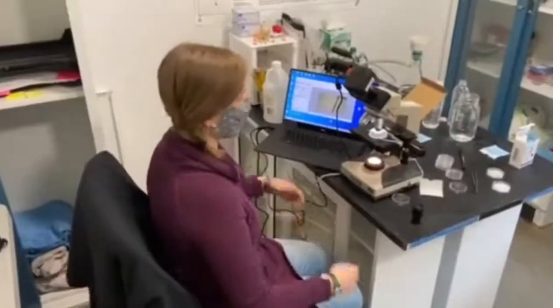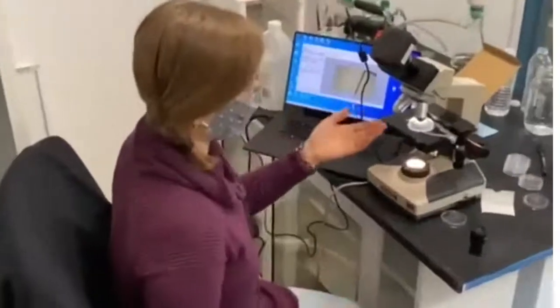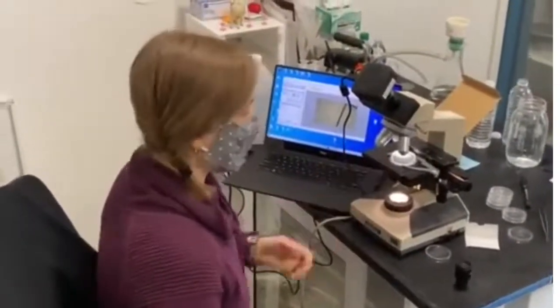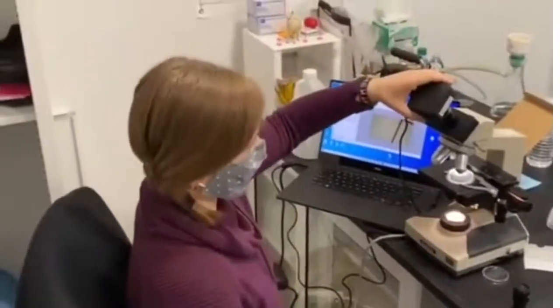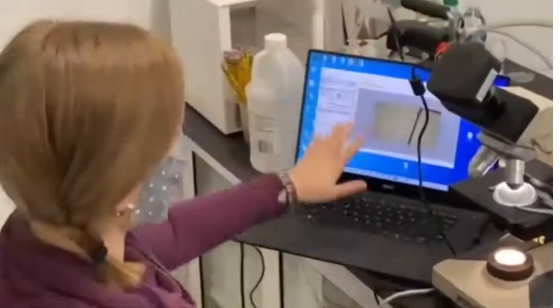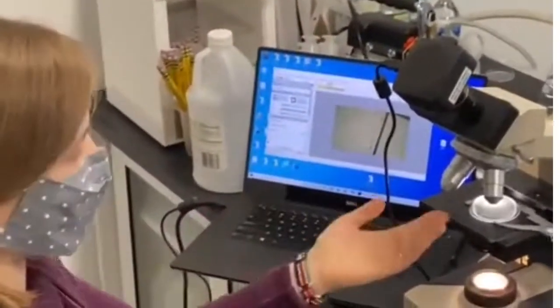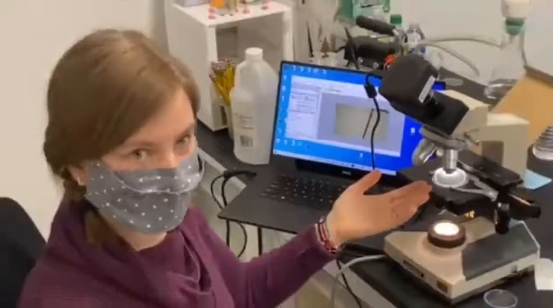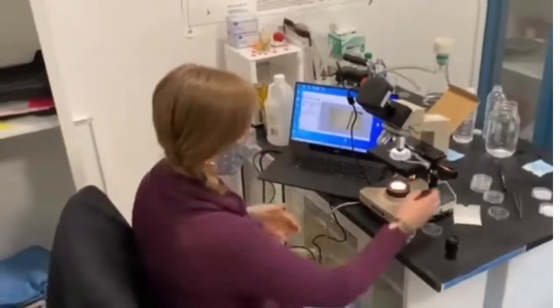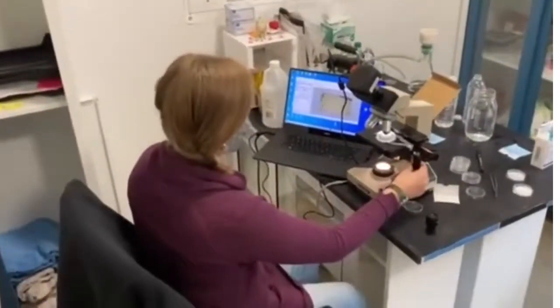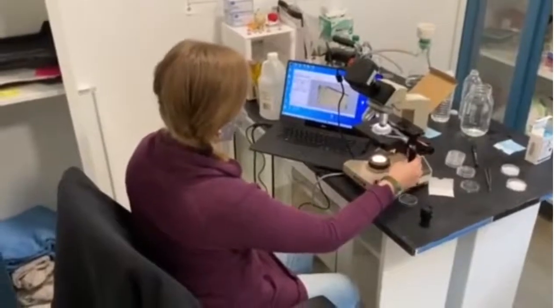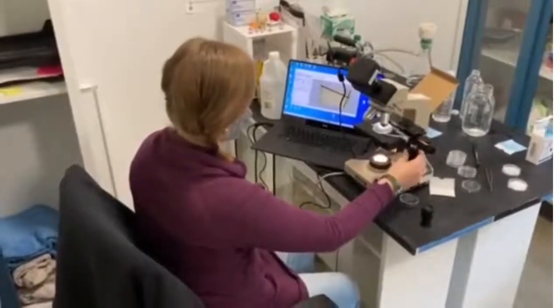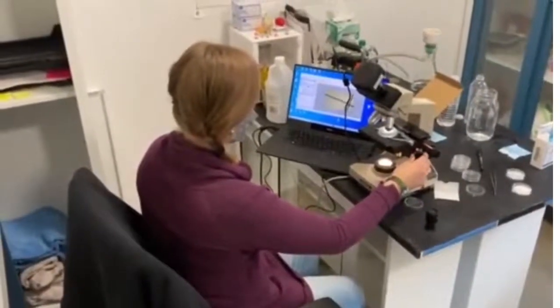Now we're over at our microscope. We have our first sample ready to view and we also have a camera hooked up to our computer so that whatever we can see underneath the lens of the microscope we can also see on our computer. We can scan the gridded filter paper to look for microplastics.